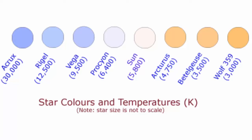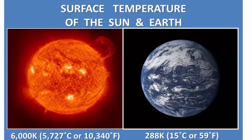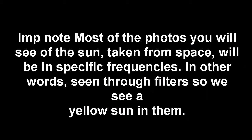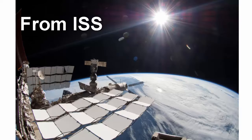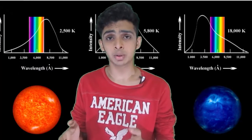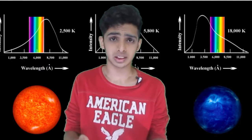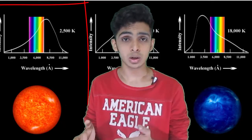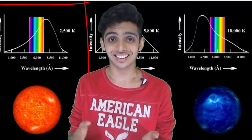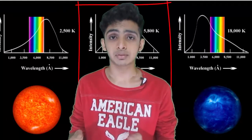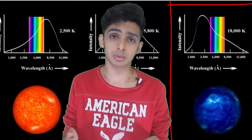The color of a star depends on its surface temperature. Our sun's surface temperature is about 6000 Kelvin. Although it looks yellow from here on Earth, the light of the sun is actually very white from space. This white color of the sun is due to its temperature of 6000 Kelvin. If the sun were any cooler, it would give off light in the red end of the spectrum. If the sun were hotter, it would appear to be blue.